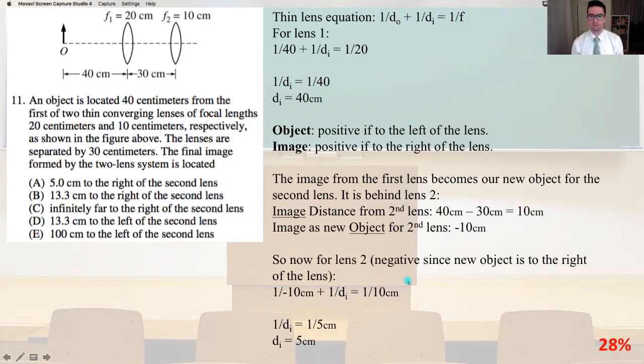The first image from the first lens becomes our new object for the second lens. It is behind lens 2. The image distance from the second lens is 40 cm minus 30 cm equals 10 cm. The image as a new object for the second lens is minus 10 cm. Now for lens 2, it's going to be negative since the new object is to the right of the lens. 1 over minus 10 cm plus 1 over DI equals 1 over 10 cm. 1 over DI equals 1 over 5 cm and DI equals 5 cm and that is answer A.